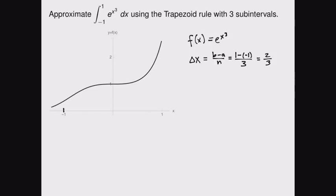So my left hand endpoint is negative 1, which means my next endpoint is delta x to the right. Well, negative 1 plus 2 thirds comes out to negative 1 third, and this distance right here is delta x. Another delta x to the right gets me up to positive 1 third, and then the last delta x gets me all the way up to 1. So now I've got the edges, the endpoints of my trapezoids drawn.